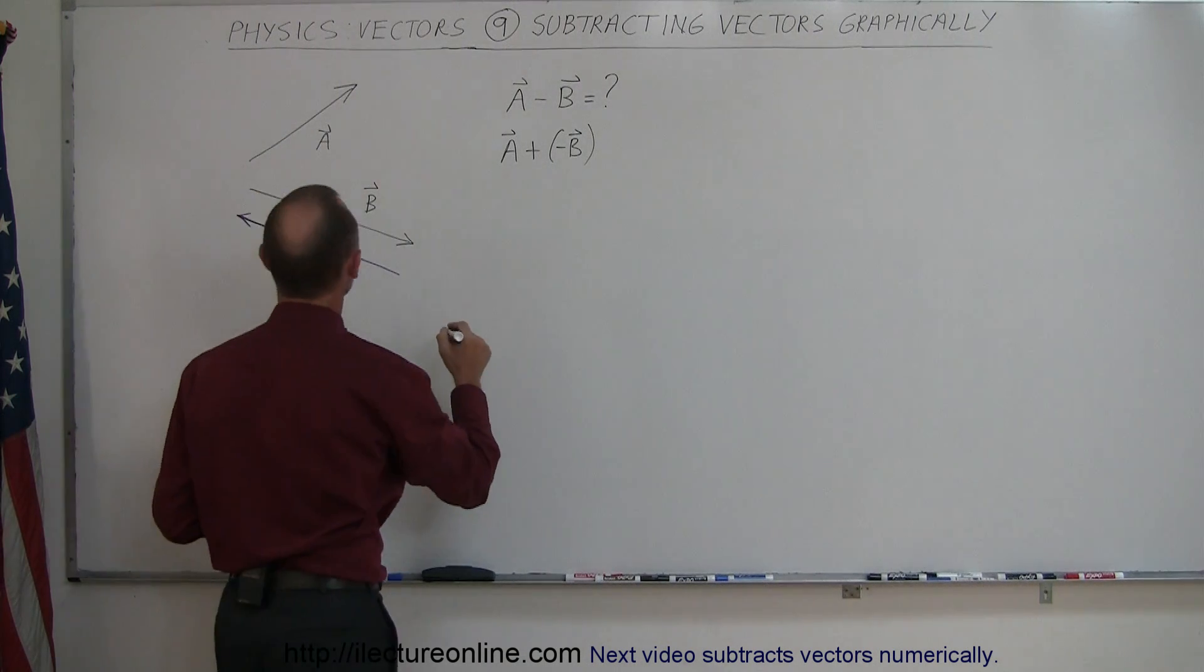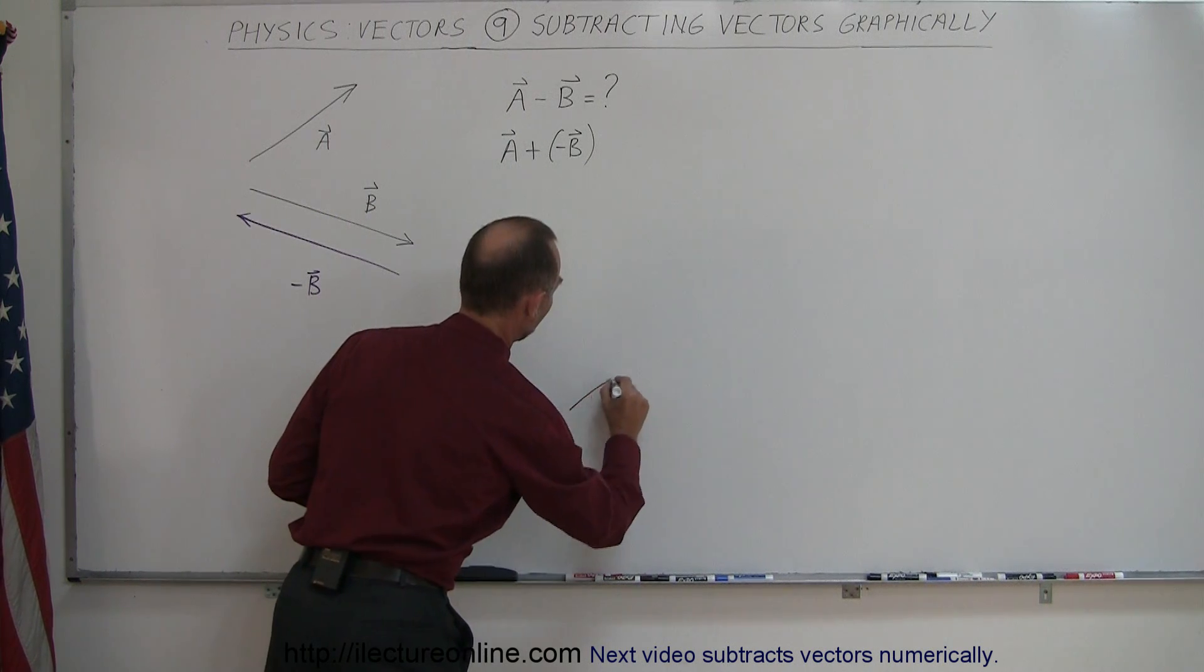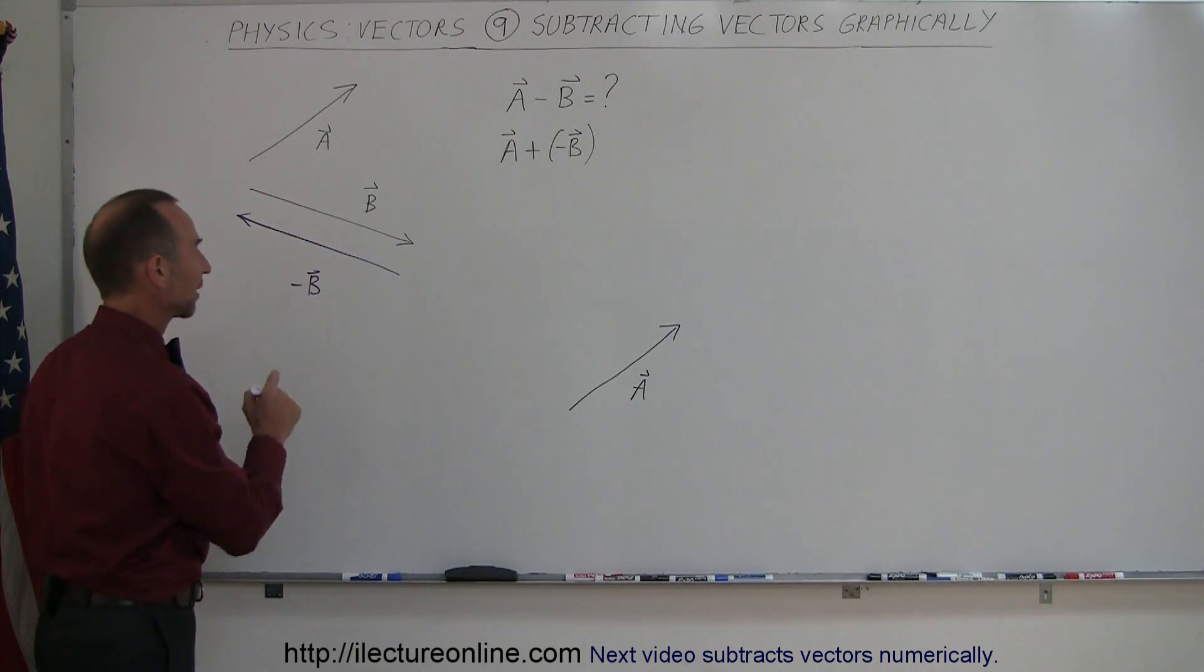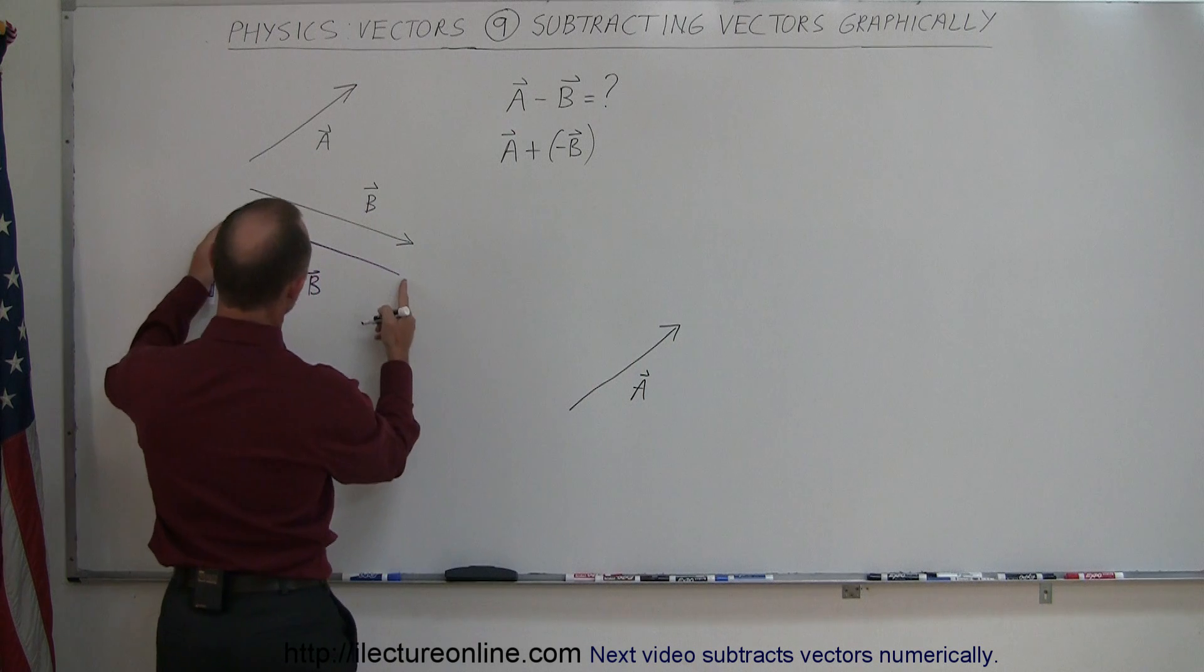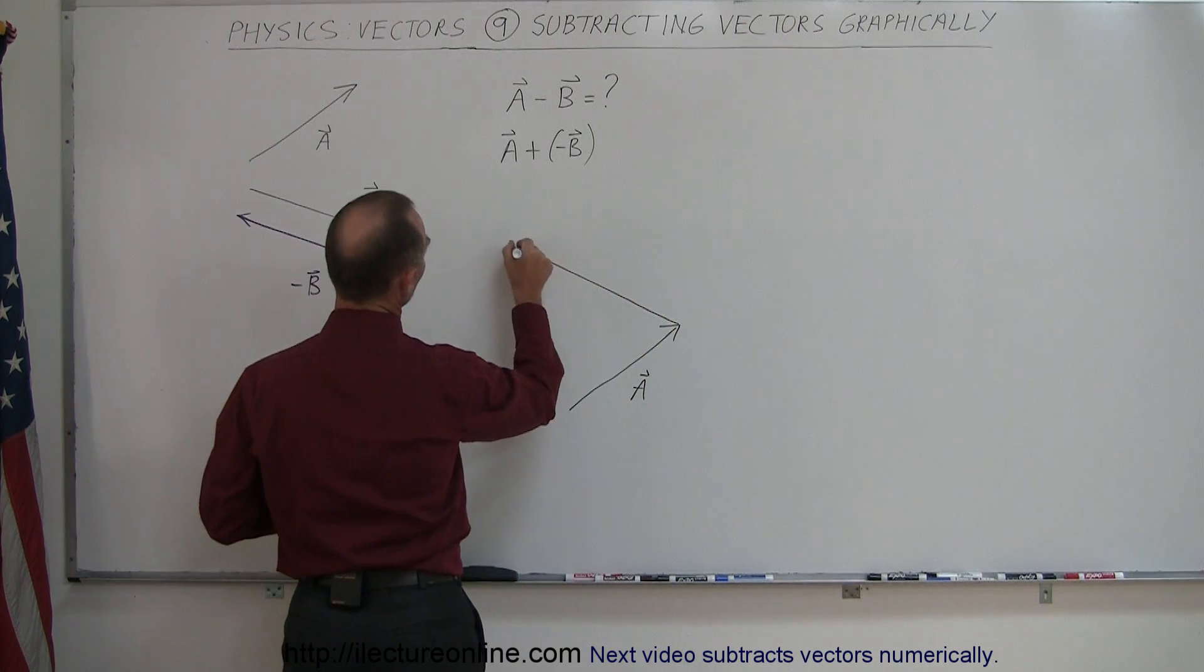And so what I can do then is redraw vector A over here. So there's my A vector. I'm going to add my negative B vector, so I'm going to put the tail of the B vector on the tip of vector A. Take this, put it over here, and this is my negative B vector.